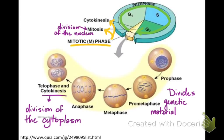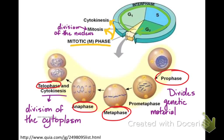Mitosis includes four major phases: prophase, metaphase, anaphase, and telophase. We've also added, in recent years, a subphase called prometaphase that comes between prophase and metaphase. It's been added to better represent all the things we know are going on, since prophase used to have a huge list of events. So we've subdivided it now.